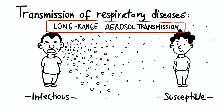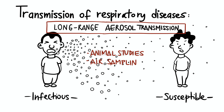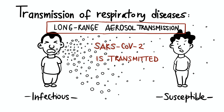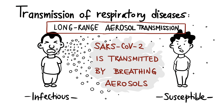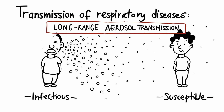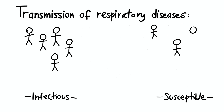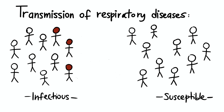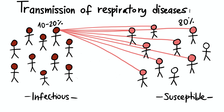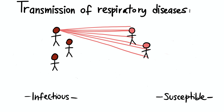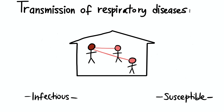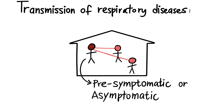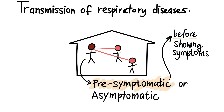Animal studies, air sampling, and super spreading show that SARS-CoV-2 is transmitted by breathing in aerosols. SARS-CoV-2 is an overdispersed pathogen, like SARS and measles. This means as few as 10% of people transmit 80% of the infections, and many people barely transmit at all. Most infections happen within households where one or two other people may be infected. Also unique to SARS-CoV-2 is that many transmissions are pre-symptomatic or asymptomatic, so you literally have no idea who is infectious — people are most infectious right before they have symptoms.